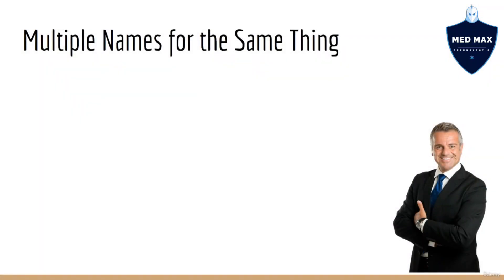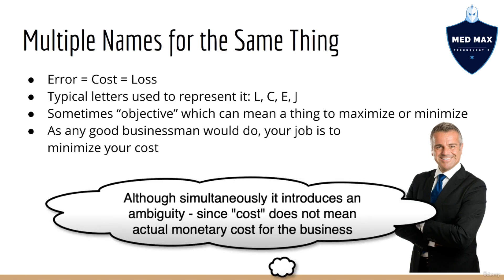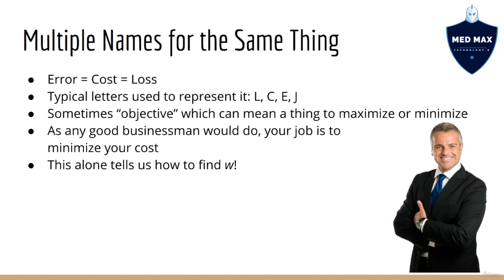As a side note, since some students get confused by this at first, we have multiple names for this error, and we usually use them interchangeably. Sometimes we call it a loss, sometimes we call it an objective, or sometimes we call it a cost. However, these all mean the same thing. I like the term cost because it makes intuitive sense for business people. As any good businessman would do, your job is to minimize your cost. And in fact, this statement alone tells us how to find the weights w.